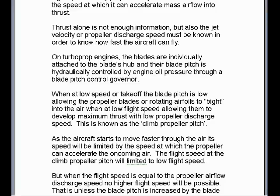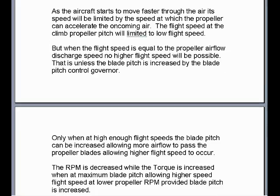On turboprop engines, the blades are individually attached to the blade hub and their blade pitch is hydraulically controlled by engine oil pressure through a blade pitch control governor. When at low speed or takeoff, the blade pitch is low, allowing the propeller blades to bite into the air and develop maximum thrust with low propeller discharge speed. This is known as the climb propeller pitch setting. As the aircraft moves faster, its speed will be limited by the speed at which the propeller can accelerate the oncoming air.